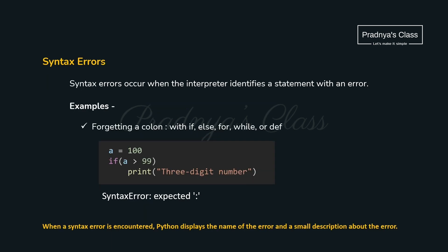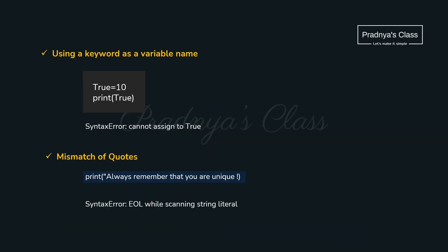Let's first go through syntax error. Look at the example — here the syntax is wrong because a colon is missing. These types of errors are identified by the Python interpreter, which will give the name of the error and a description about the error. Here are some more examples: here 10 is initialized to a keyword, which is invalid, and in the next example, double quotes are missing. Python interpreter will give the description of the error so we can rectify and correct it.